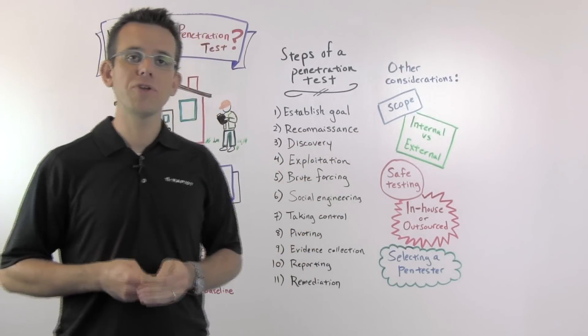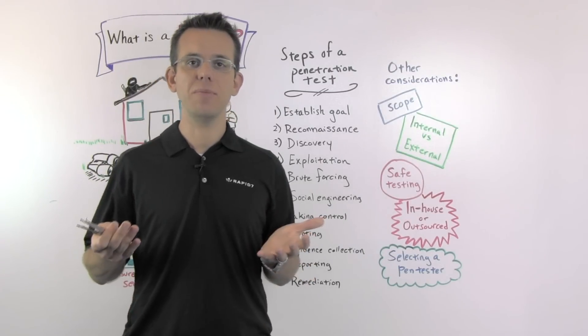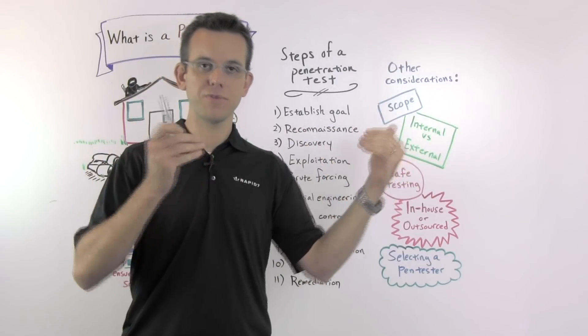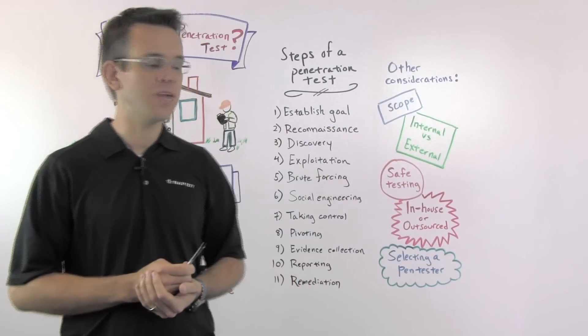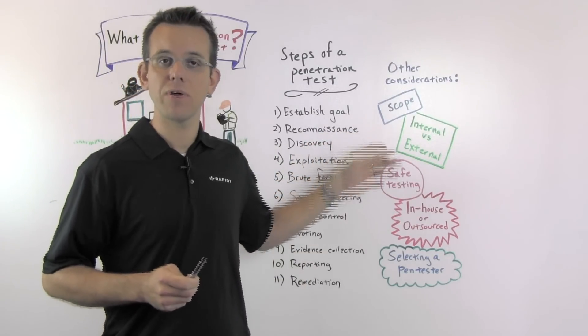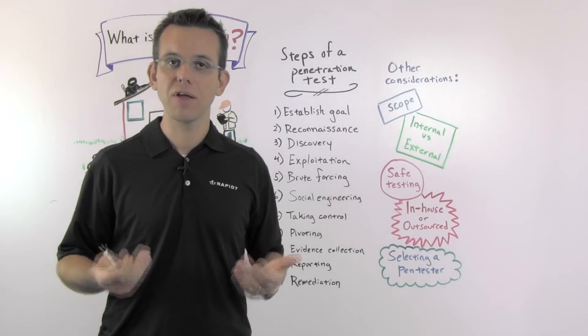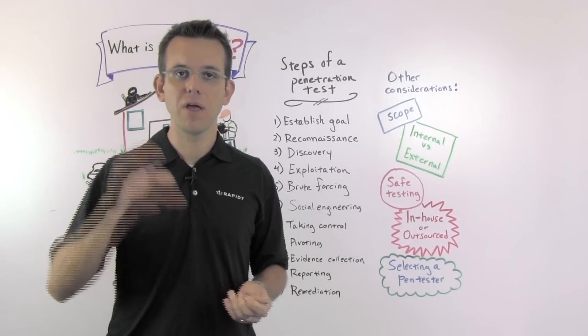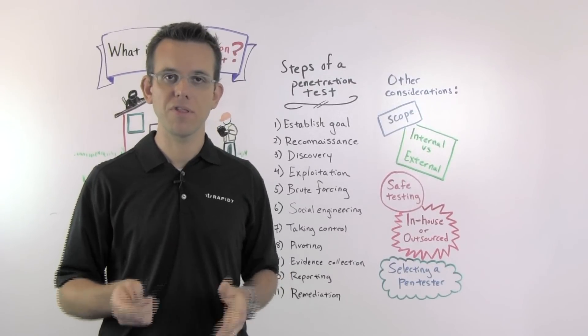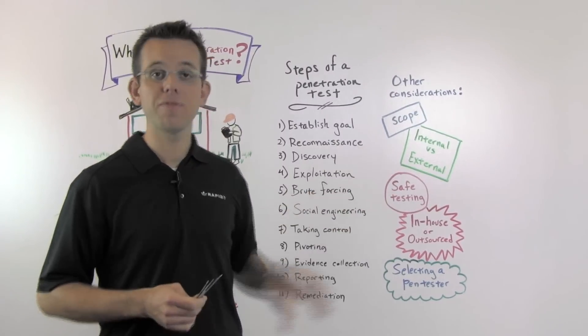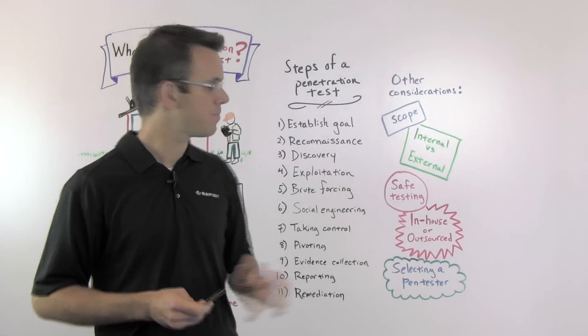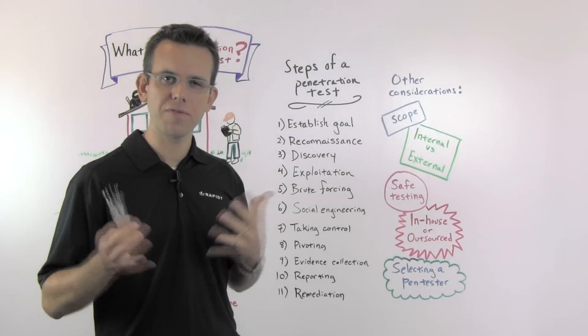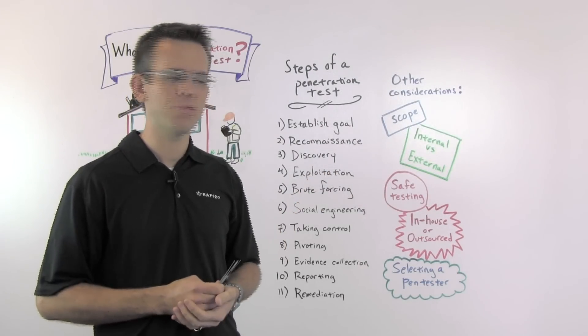Then also, do you want to do an internal or an external pentest? And that essentially means, do you assume that the attacker is coming from the outside of the network, attacking your company over the internet, or are they inside the network already? It could be a malicious insider. It could also be some consultant or somebody who's got physical access to your network, plugged in a box into the network and sniffed network traffic, and is going from there from inside the organization. So that's part of your scope and your starting decision of what's my attack vector that I'm trying to test and protect against.